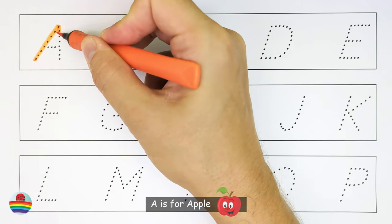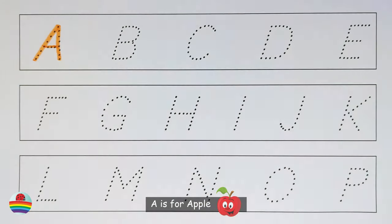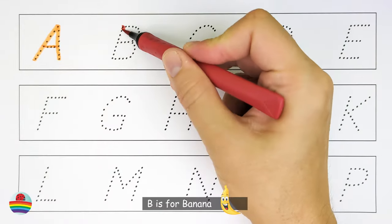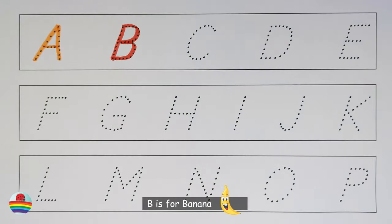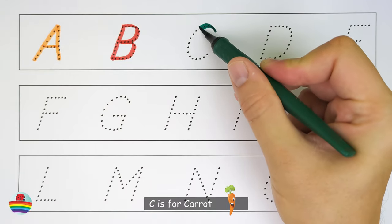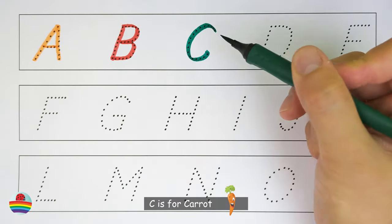A. A is for apple. B. B is for banana. C. C is for carrot.